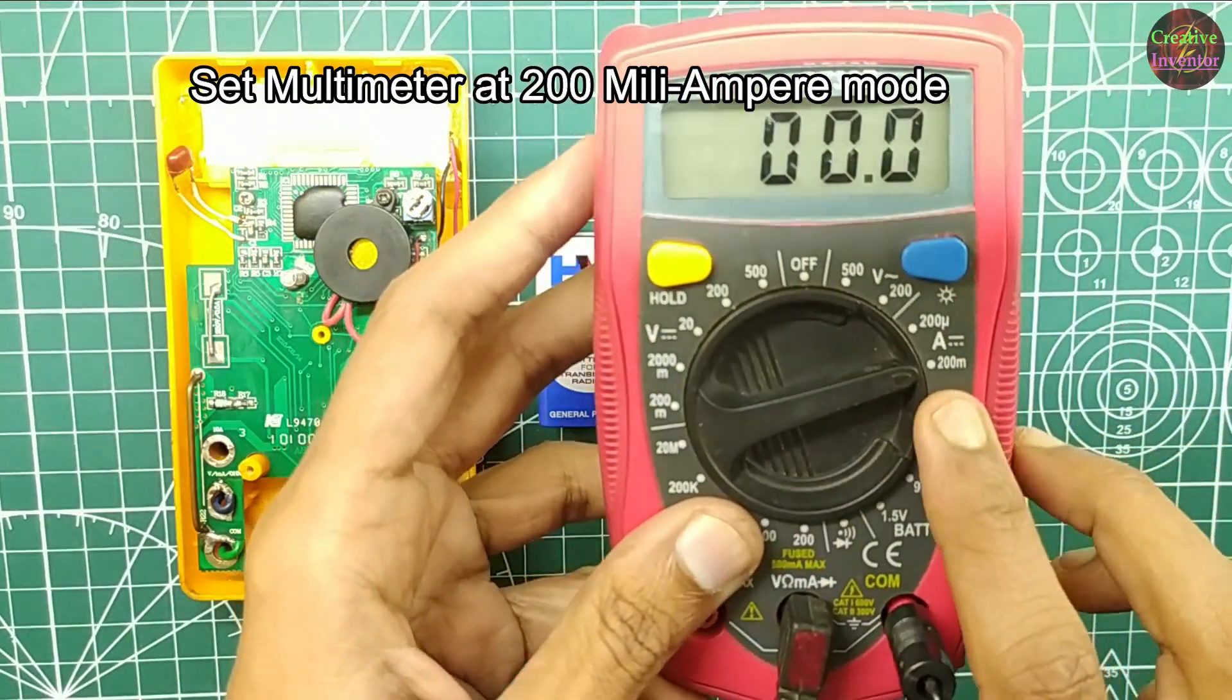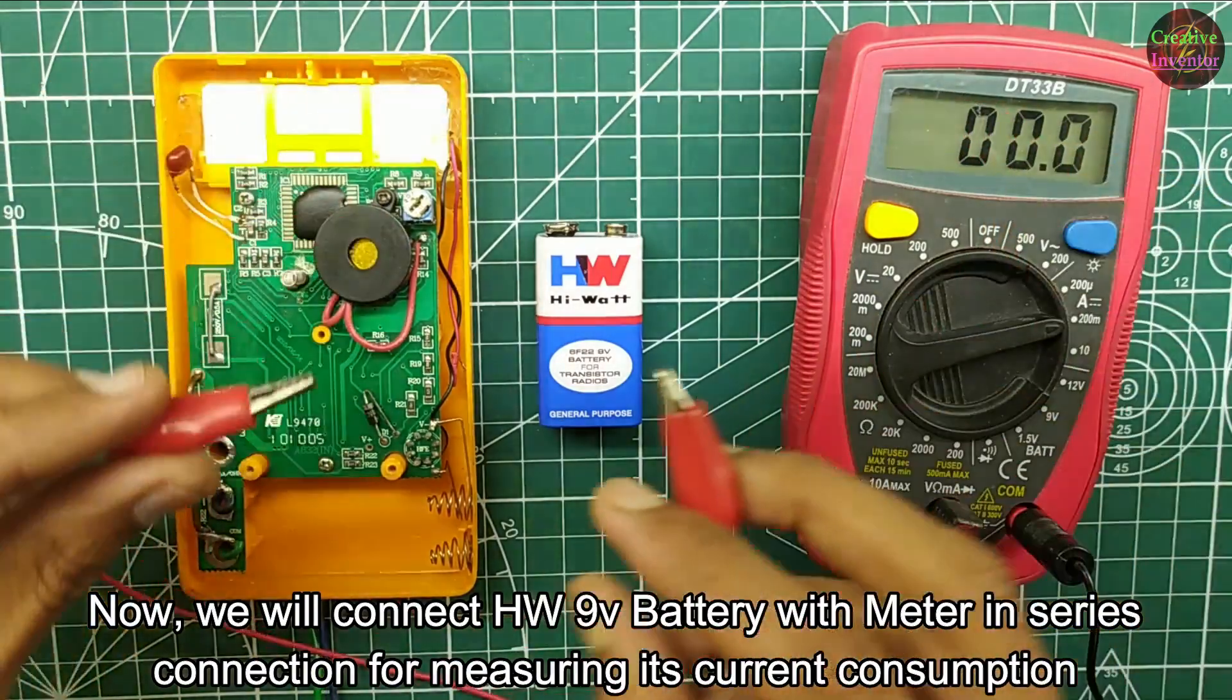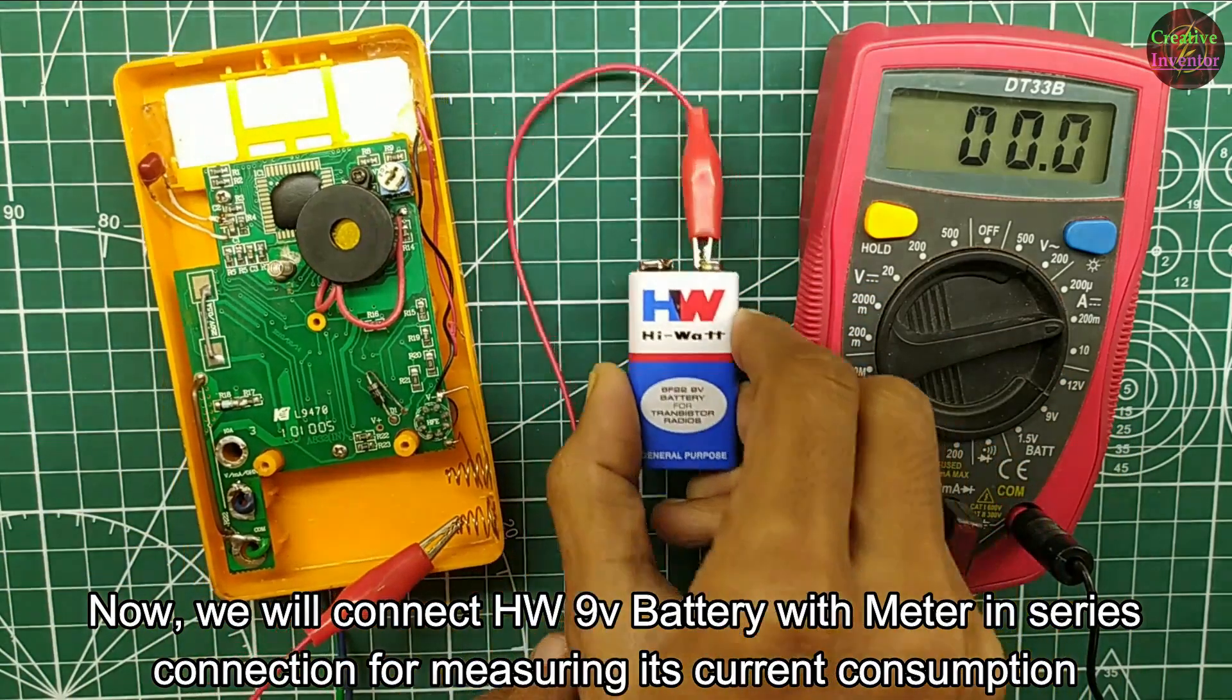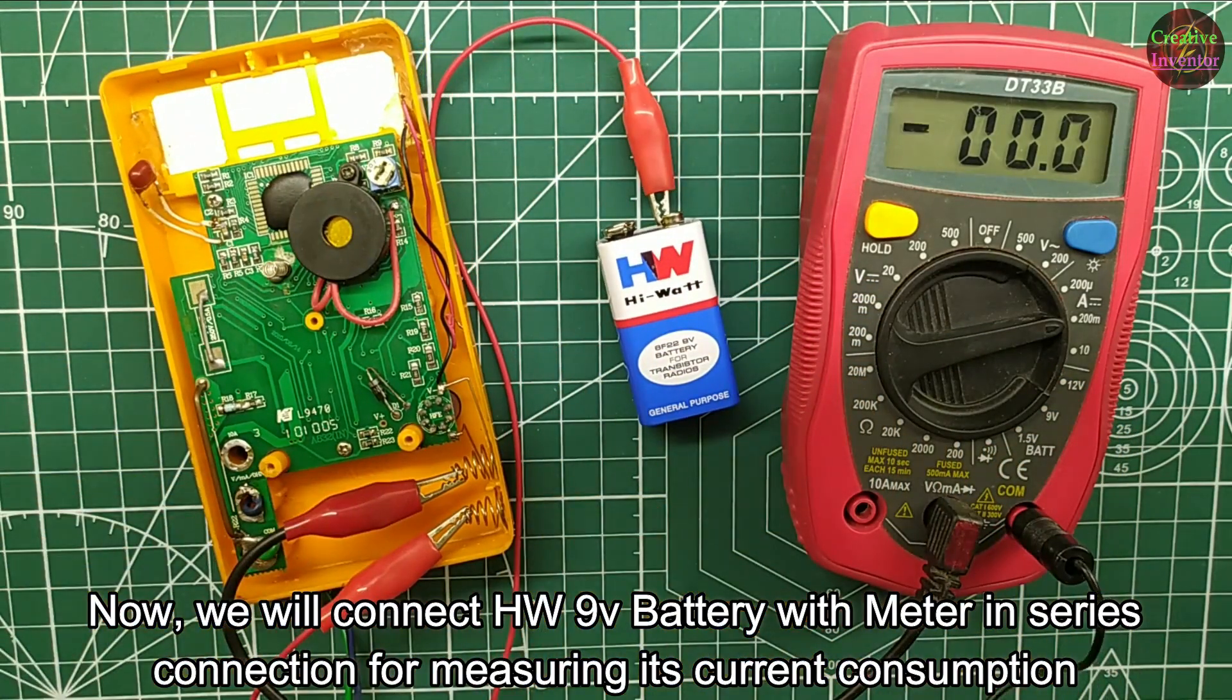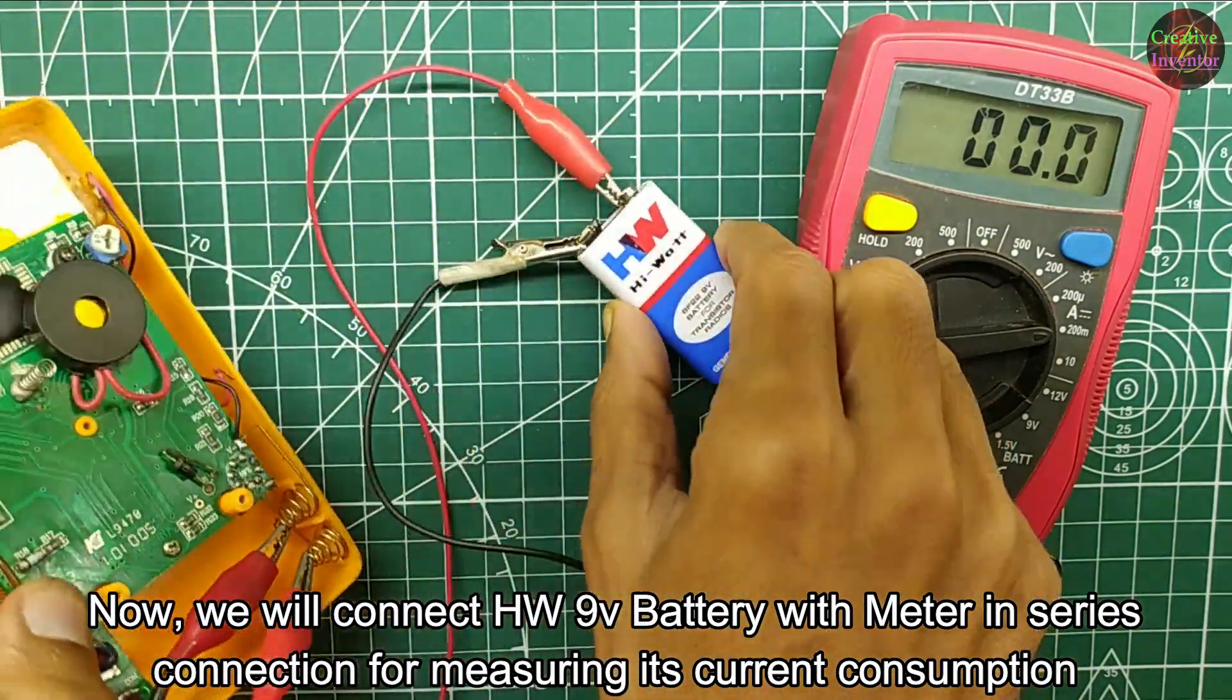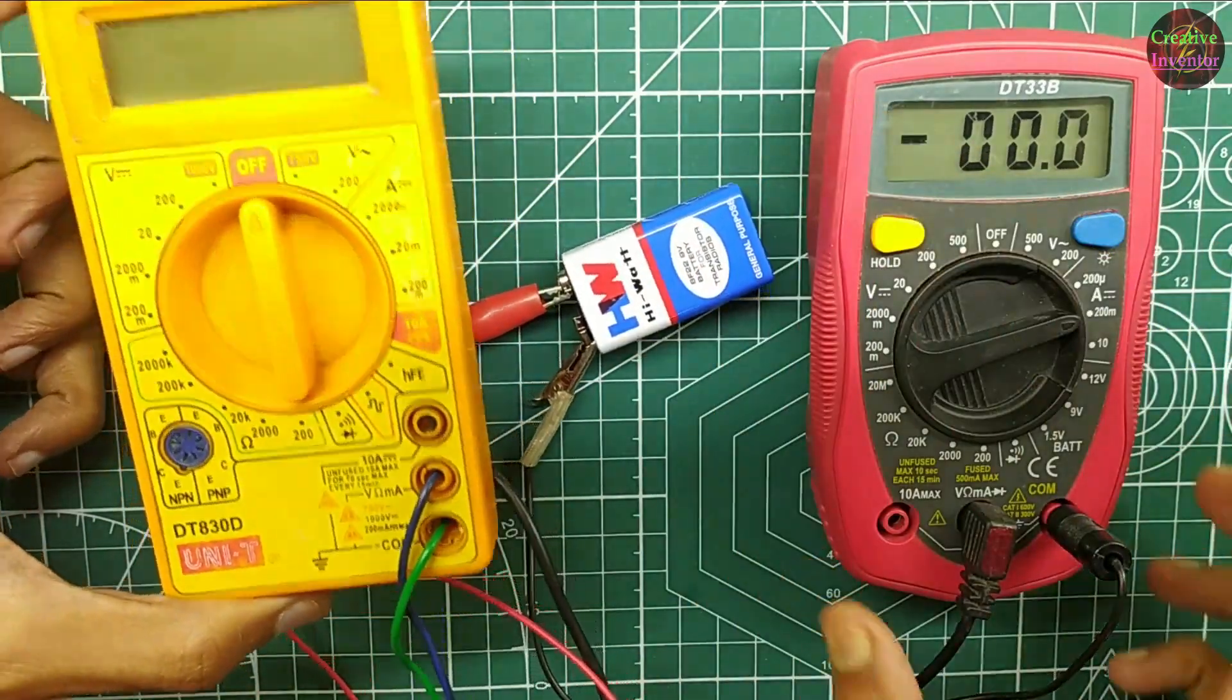Set multimeter at 200 milliampere mode. Now we will connect 9 volt battery with meter in series connection for measuring its current consumption.